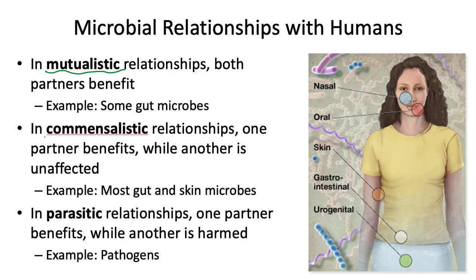In commensalism or commensalistic relationships, one partner benefits while the other is unaffected. In the case of microbes in humans, our gut microbes and skin microbes benefit from living on and in us, but humans are relatively unaffected by their presence. It's actually thought now that even our commensal microbes do provide some benefit by serving as a protective barrier against infection.